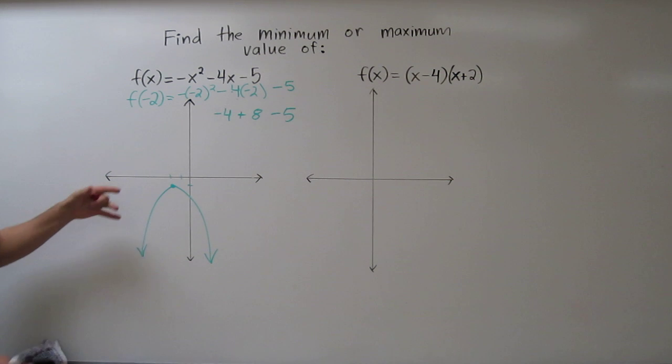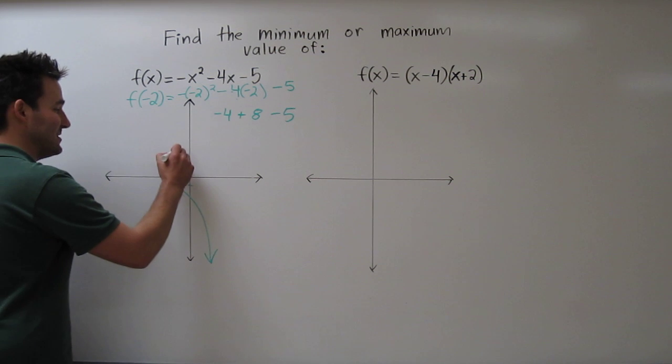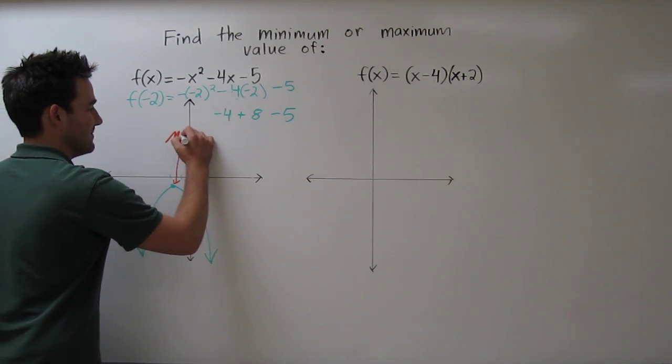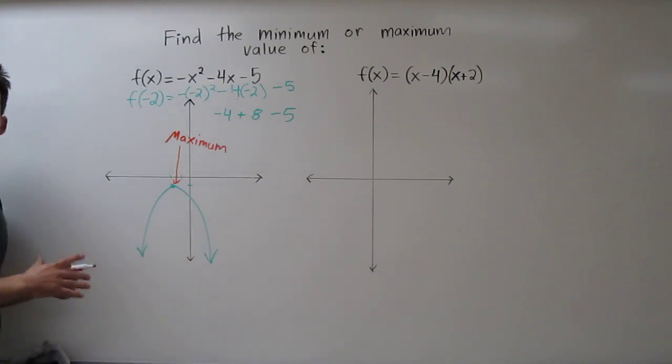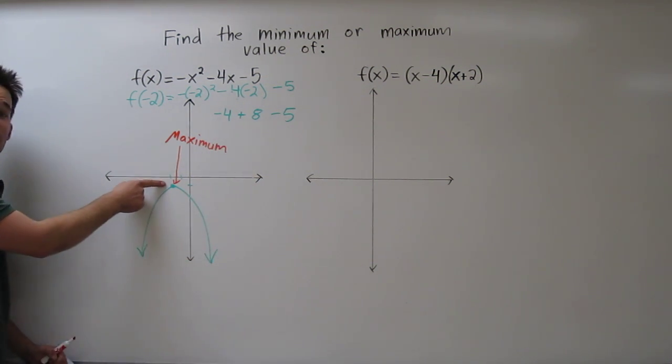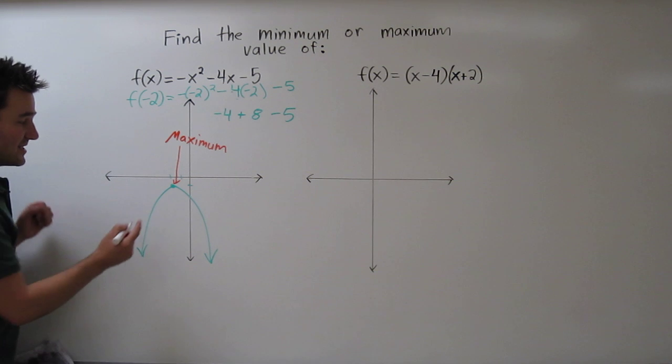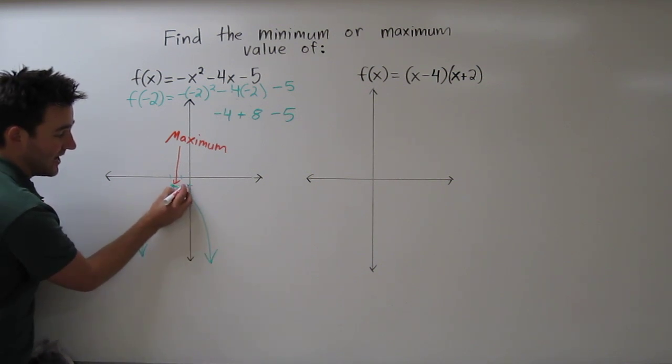I see that because the parabola is pointing down, the maximum value is located at the vertex. Right there. That's the maximum.